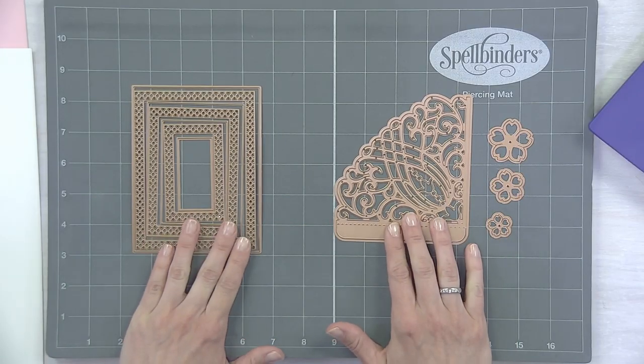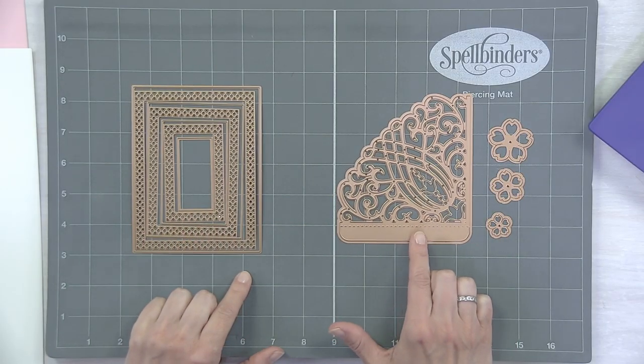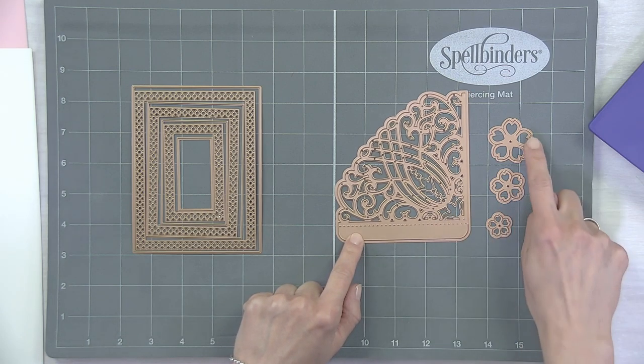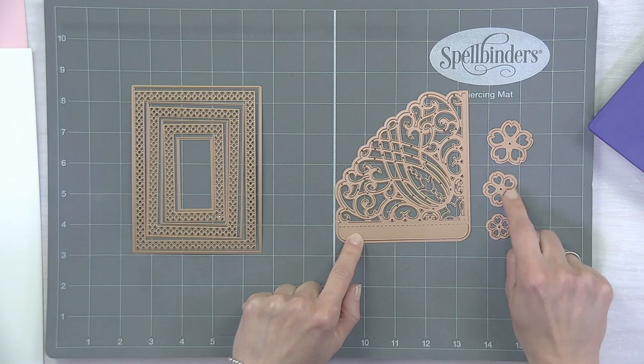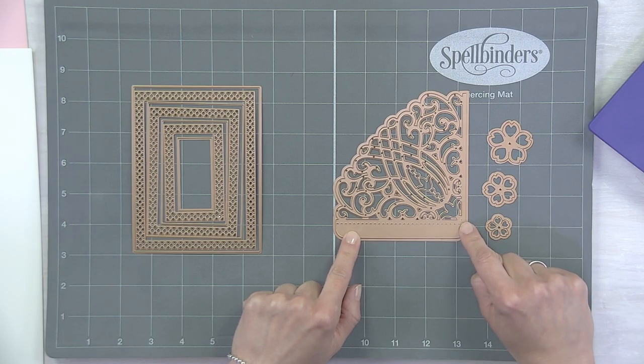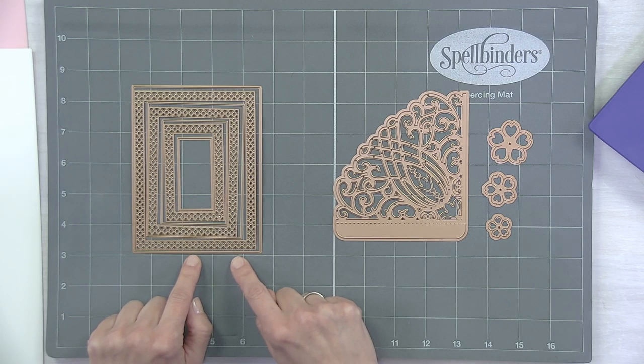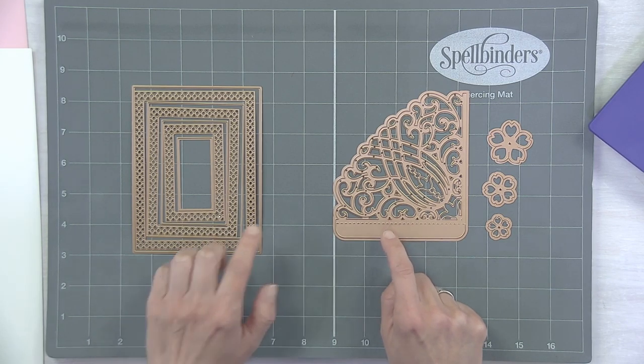So here are two of the dies we're going to feature in this demo. This is her grand pocket and you'll notice that it is grand, in fact it is quite large, but it also has these three flowers, Cinch and Go flowers, that come with it which we will be using later. And we're also going to be using the Candlewick rectangles. I'm going to put the rectangles aside for now and we're going to go ahead and cut out our pocket.